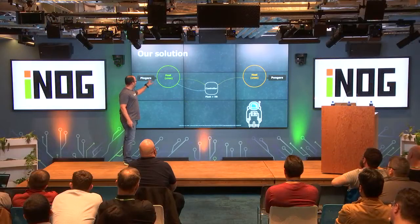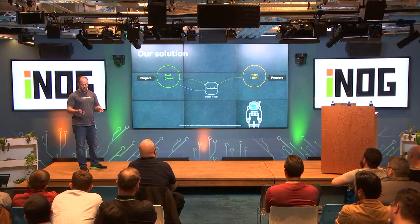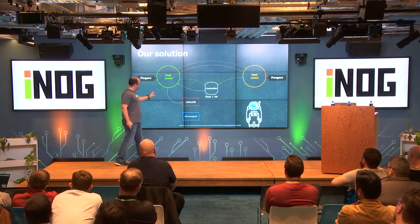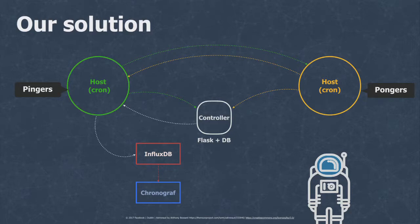When the pingers fire up, they send a request to the controller asking where all the pongers are. The controller replies with a list of devices to ping — right now that's all the pongers available, though you could divide that into smaller chunks. The pinger starts sending probes to the pongers, and the results of all this traffic end up going to InfluxDB — an open source time series database — and you can visualize it using Chronograph. We chose Chronograph because it's open source, but you could also use something like Grafana which provides similar functionality.